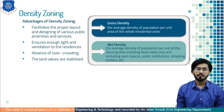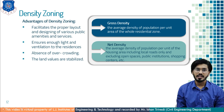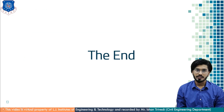Advantages of density zoning include: it facilitates the proper layout and design of various public amenities and services; it ensures that residents benefit from all essential services; it ensures enough light and ventilation for residents; there is an absence of overcrowding; and land values are stabilized by avoiding unnecessary concentration of population in certain places. These three aspects — use zoning, height zoning and density zoning — are very important for understanding town planning. Thanks for watching this video. I hope you have learnt about the aspects of zoning and their classification. Thank you.